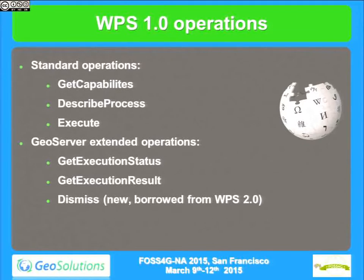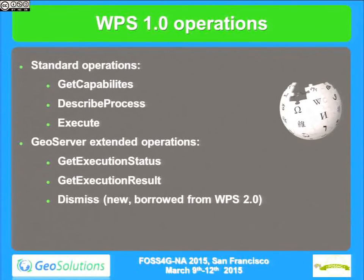The protocol, very quickly: as all OGC protocols, it starts with a GetCapabilities, then a DescribeProcess to describe the content of a particular item in the capabilities, and then we have the Execute operation which actually runs the process. GeoServer adds three extra operations which are not part of the standard — vendor extensions — and I'll talk about them briefly later.